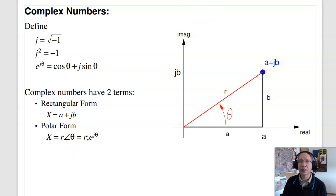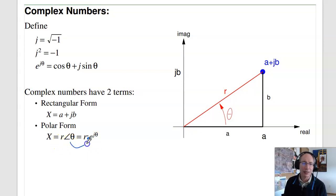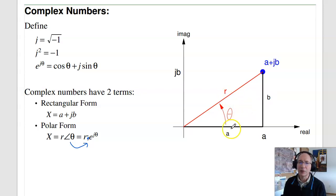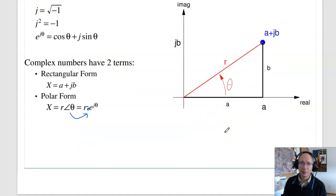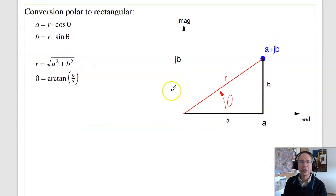In R at angle theta, that means amplitude R times E to the J theta — but E to the J theta is hard to write, so we just write R∠θ, which means the same thing. The conversion from trigonometry gives us: R is the square root of A squared plus B squared, and the tangent of the angle is B over A. You can convert between rectangular and polar fairly easily.